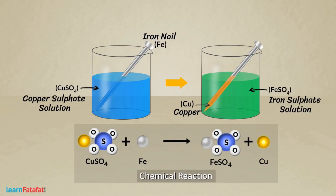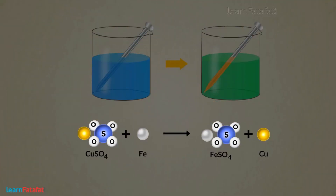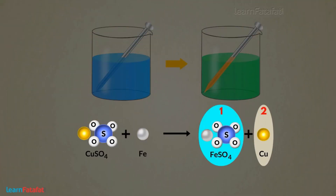How can we identify if the change is chemical or physical? We can identify a chemical change with some observations. During a chemical reaction, one or more new substances or products are formed.